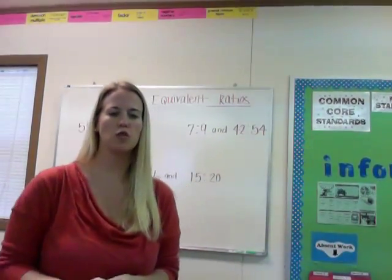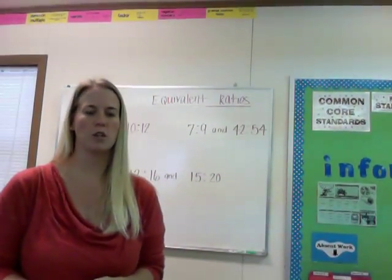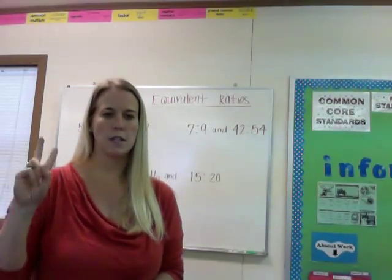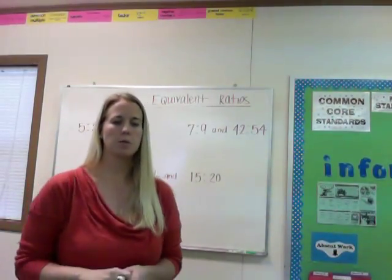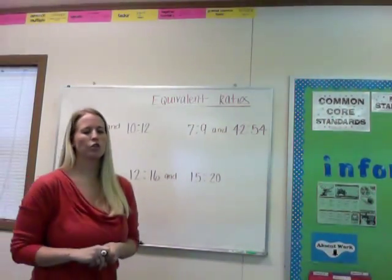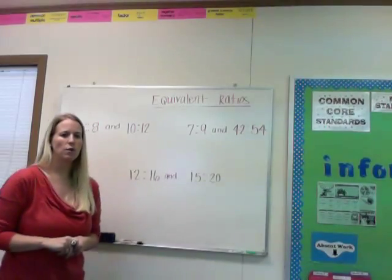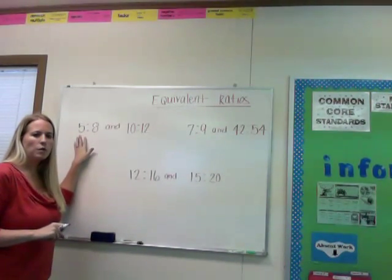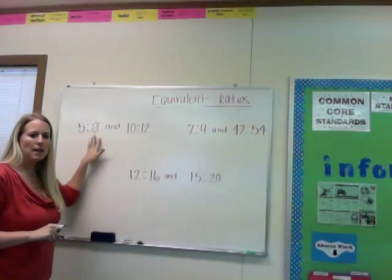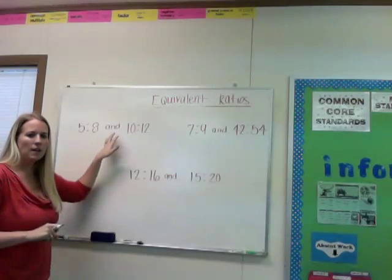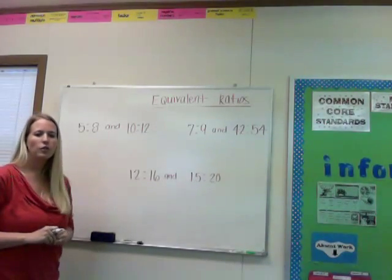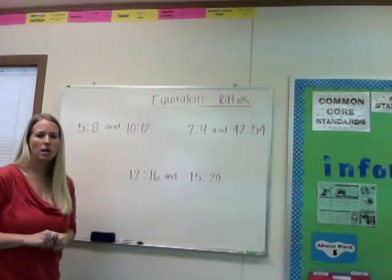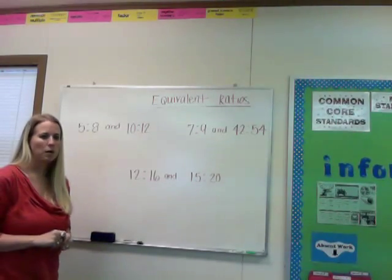This time we're going to decide if two ratios are equivalent. To do this, it takes two steps. The first step is to look at your ratios that you have. We're going to start with this one right up here. We have the ratios 5 to 8 and 10 to 12. The first thing I need to do is make sure that they are both written in simplest form.